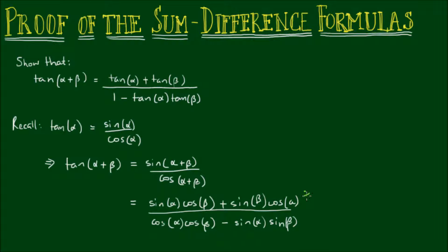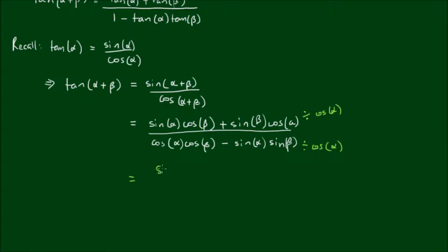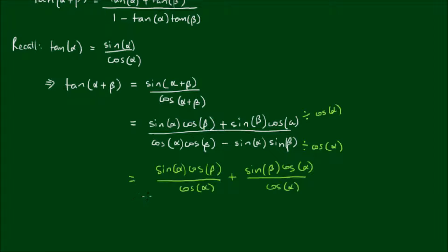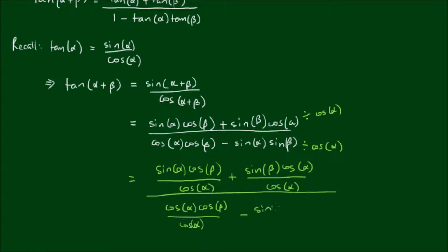What I can do now is divide the top and the bottom by cos of alpha to maintain equivalency. So on the next line, I would have sin of alpha times cos of beta divided by cos of alpha, plus sine of beta times cos of alpha divided by cos of alpha, all over — and now dividing the denominator by cos of alpha — I get cos of alpha times cos of beta divided by cos of alpha, minus the sine of alpha times sin of beta divided by cos of alpha.